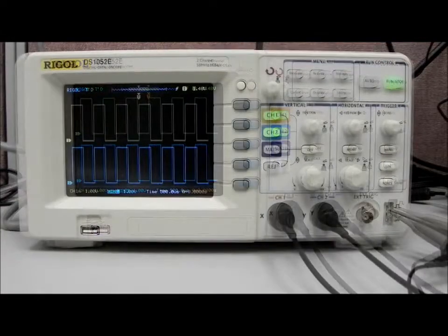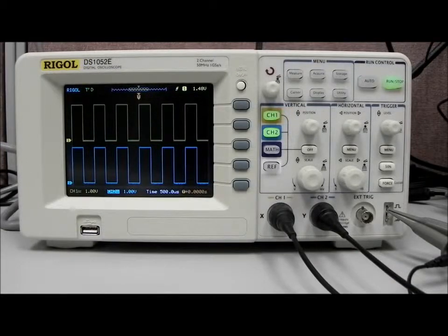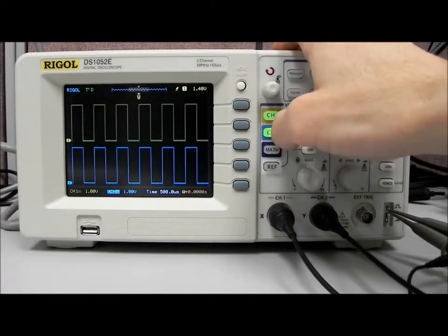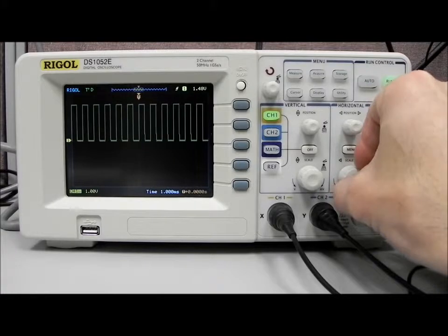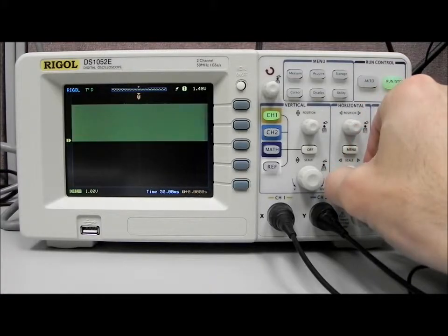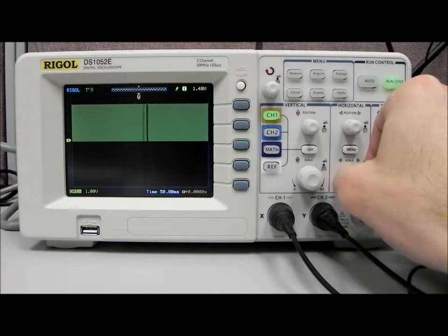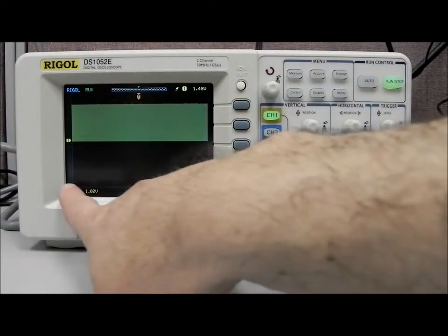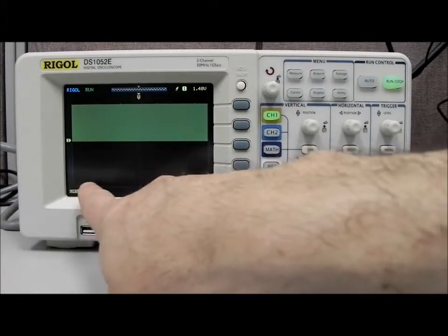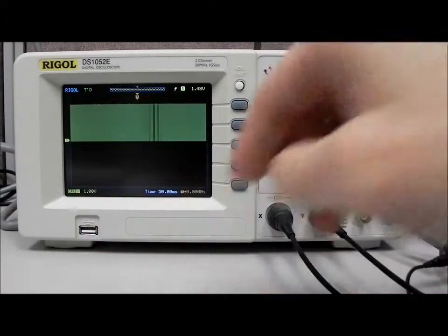Okay, now let's look at the sampling and memory features that we have available with this particular scope. We're going to shut down channel 2 and we're going to increase the time scale here. We're going to bring it to 50 milliseconds per time division. Now remember we have a one kilohertz signal, so we're looking at a period of about one millisecond. So at 50 milliseconds per division times 12 divisions, we're actually looking at quite a number of waveforms.